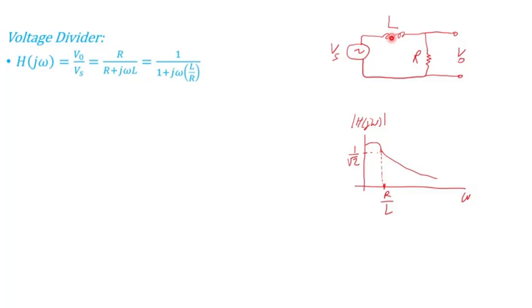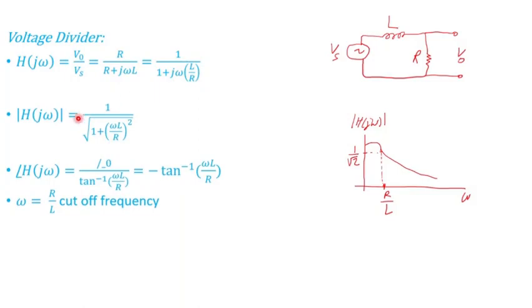In the frequency domain we talk about impedance or reactance of an inductor, which is jωL or j times 2π times f (which is frequency) times L. So if I divide both sides by R, I get 1 over 1 plus jωL divided by R.